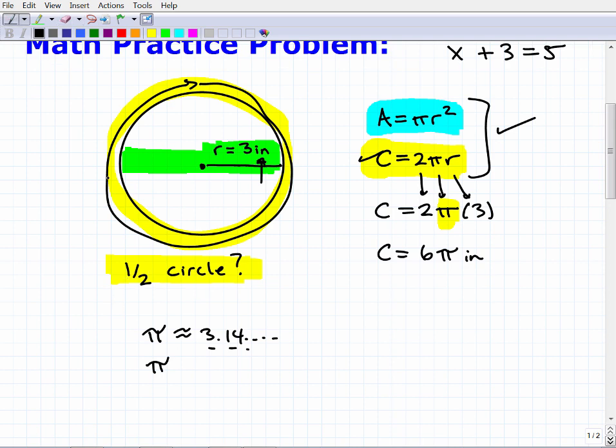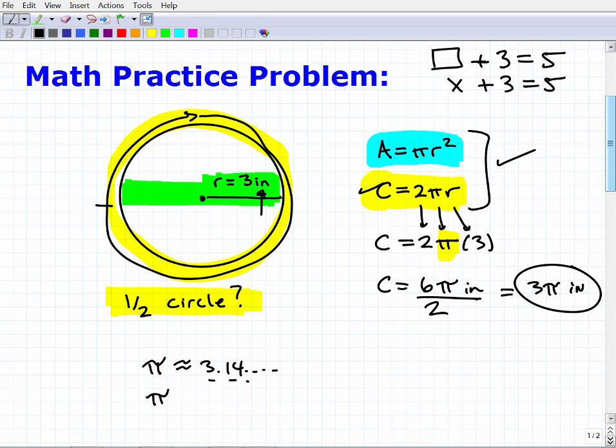You can kind of get the general idea here. Now let's go back to the problem. If I want to know what is halfway around a circle, well, I'm going to take half of the circumference. So I just can take this and divide it by 2, and you get 3π inches. That is the most exact answer.